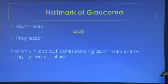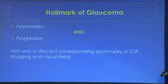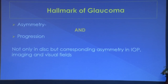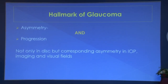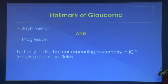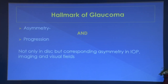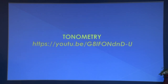The hallmark of glaucoma diagnosis is asymmetry, and when you cannot show asymmetry, look for progression. Asymmetry is important not only in the disc but must correspond with asymmetry in intraocular pressure, imaging, and fields. For example, if one eye has IOP of 12 and the other 18, and you suspect glaucoma in the eye with IOP 12, the answer is no — it is not glaucoma.